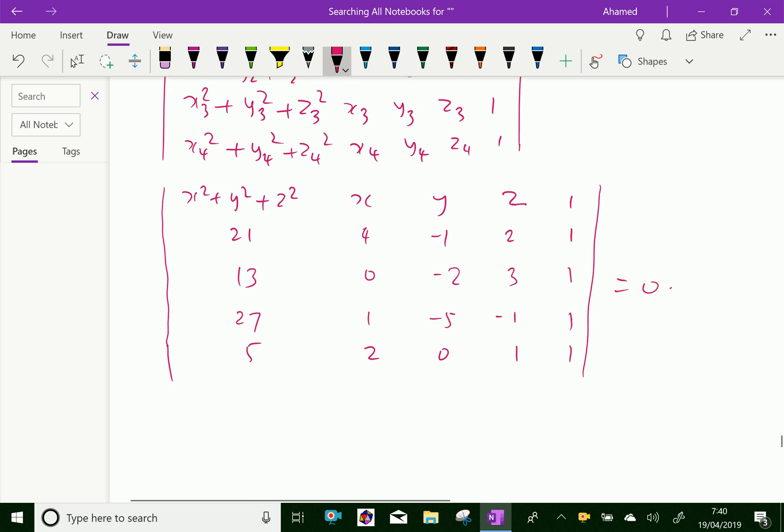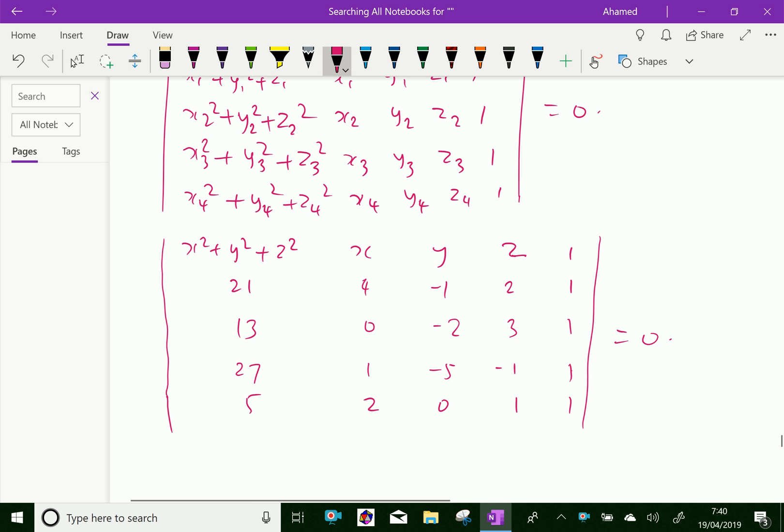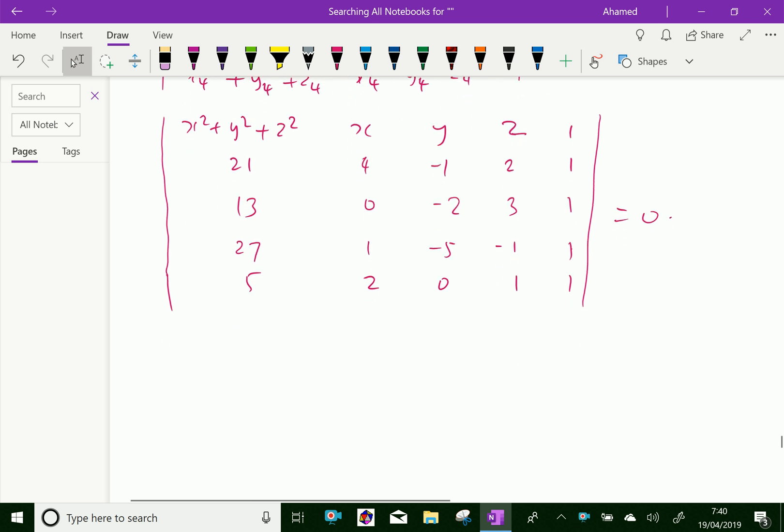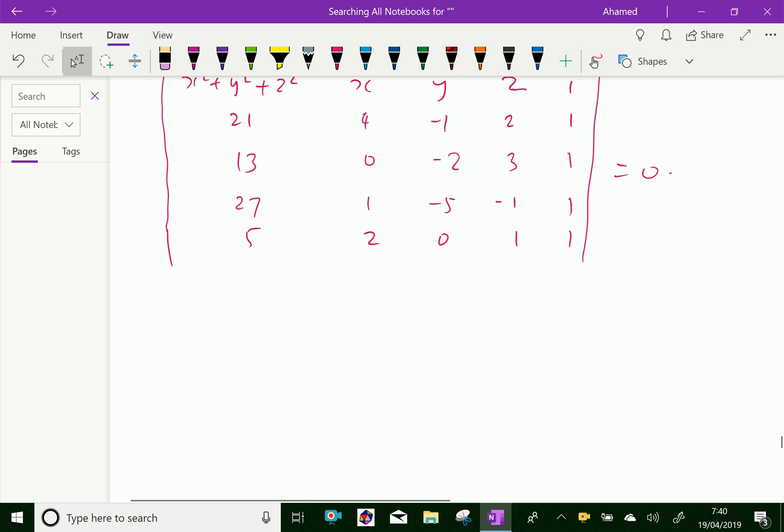By expansion of this 5th order determinant with the first row, we can get the equation. After simplifying we can get: x² + y² + z² - 4x + 6y - 2z + y = 0. This is the required equation.